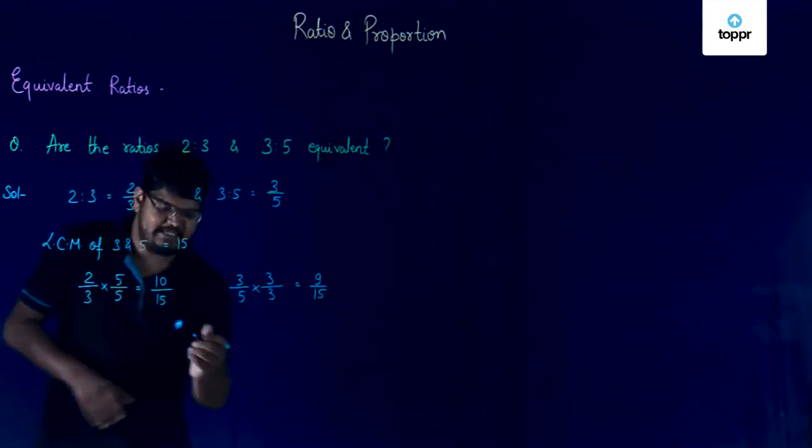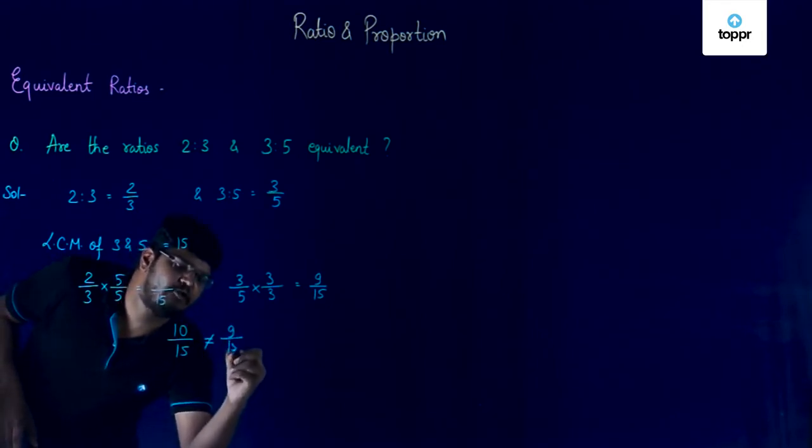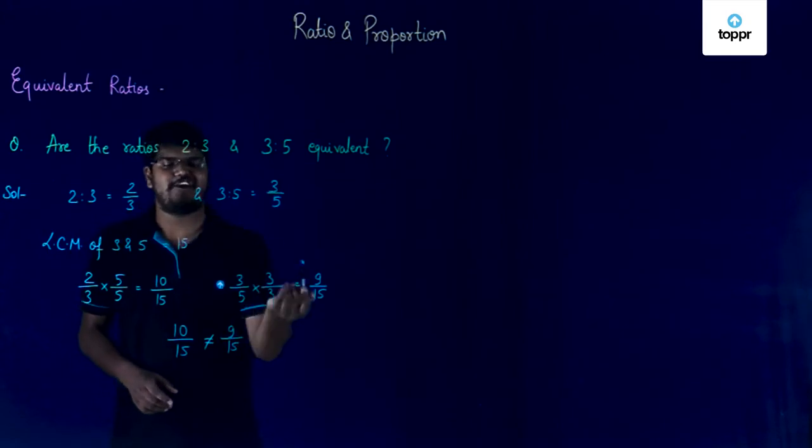You can see that 10 by 15 is not equal to 9 by 15, and since both these like fractions are not equal, we can say that 2 is to 3 and 3 is to 5 are not equivalent ratios.